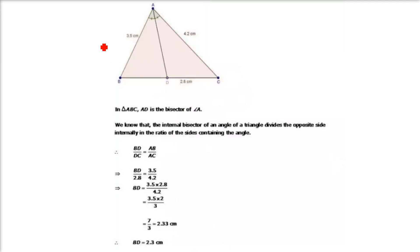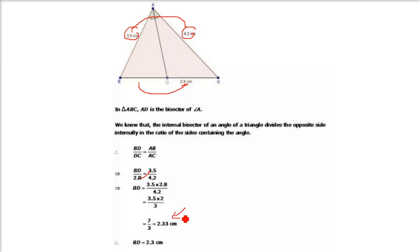In the next one, AB is 3.5, AC is 4.2, DC is 2.8, and BD is not known. So 3.5 by 4.2 equals BD by 2.8, and BD equals 2.8 × 3.5 ÷ 4.2, which equals 2.33. This is because the internal bisector of an angle of a triangle divides the opposite side internally in the ratio of the sides containing the angle.